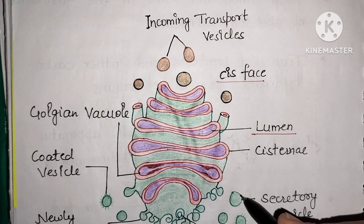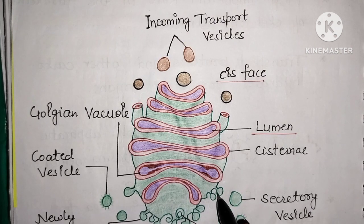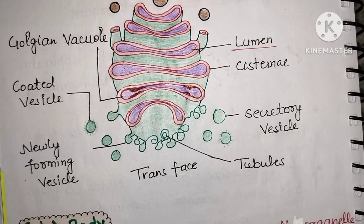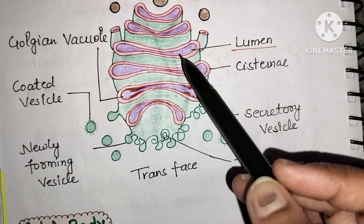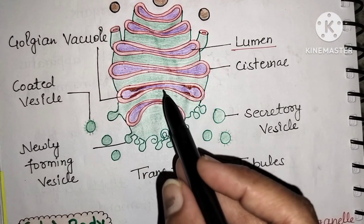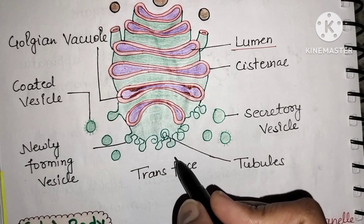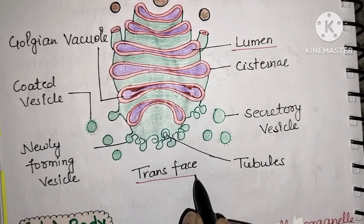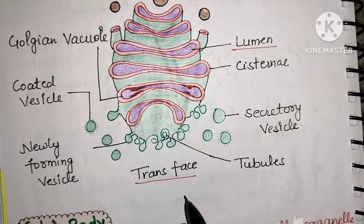The protein undergoes further modification and is directed to the target destination. The immune substances secrete it in a vesicle where it is needed. After further modification, the protein is packed and sent to the destination — this exit side is called the trans face.